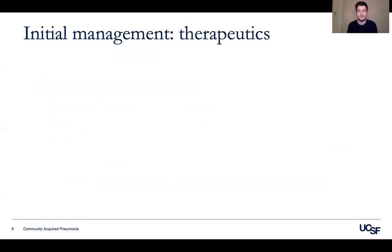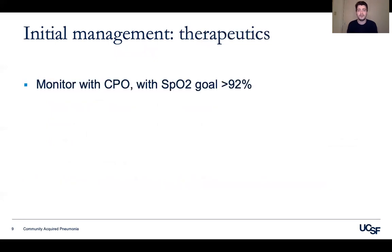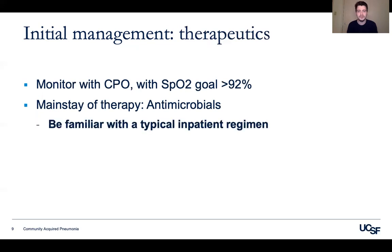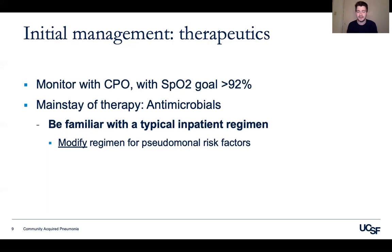In terms of therapeutics, most if not all patients with CAP should be placed on continuous pulse oximetry and monitored to maintain an SpO2 greater than 92% with supplemental oxygen. The mainstay of therapy for CAP is antimicrobials. The general approach is to be familiar with the typical inpatient regimen, then modify it if you have concern for pseudomonas, and add to it if you have concerns for MRSA.